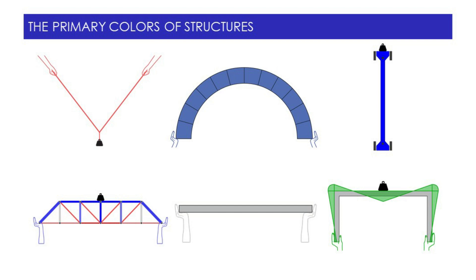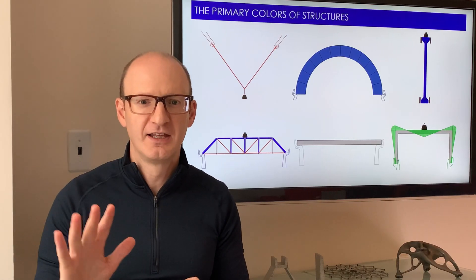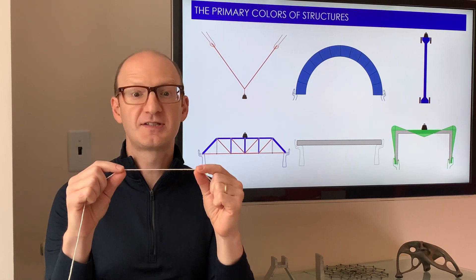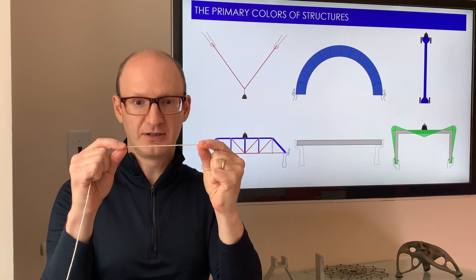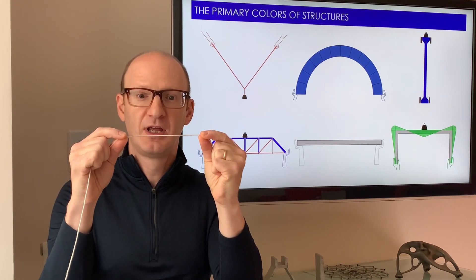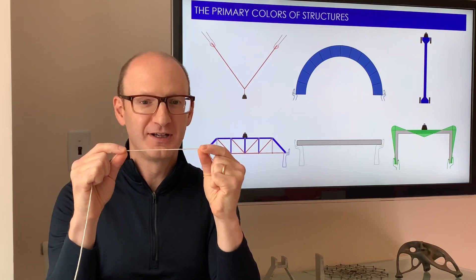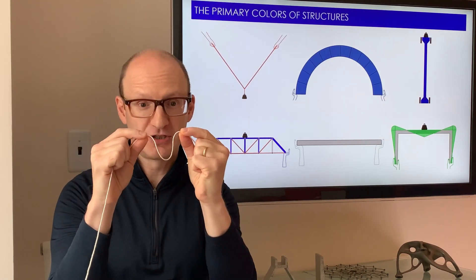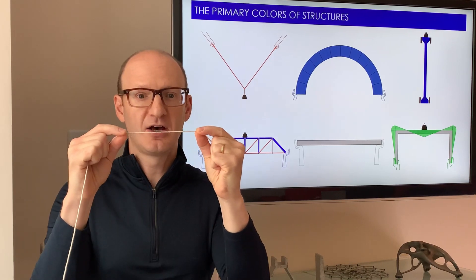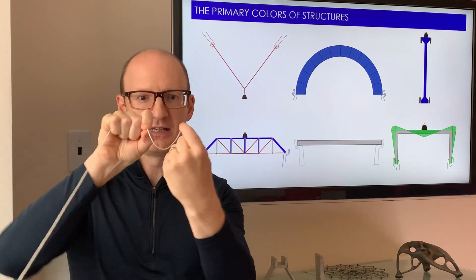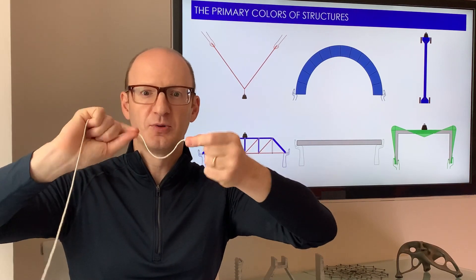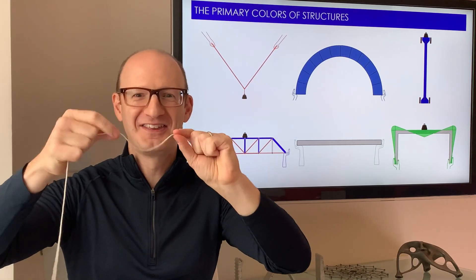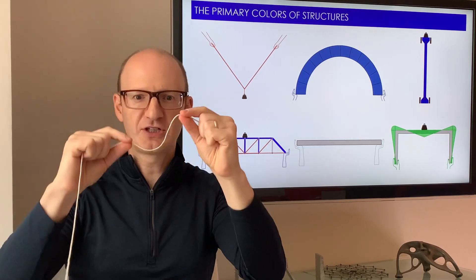The interesting thing about cables is that they can do only one thing — they can carry tension. I've got string here as an example of a cable. I can pull on the string and the string is now in tension. That's all a cable can do. It can't take compression the way a column can. It can't take bending the way a beam can. It can't take torsion, and it also can't take shear.